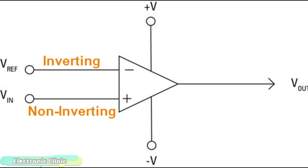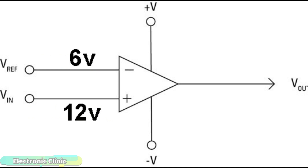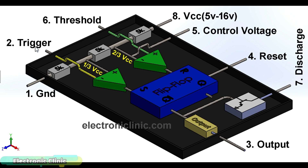A voltage comparator is an electronic device that is used to compare voltages. The output of the voltage comparator depends on the voltages available at the inverting and non-inverting inputs. If the voltage at the non-inverting input is greater than the voltage at the inverting input, then the output will be high, and vice versa. The two reference voltages — two-thirds and one-third of VCC — are connected with the inverting and non-inverting inputs of the two voltage comparators. The output of these comparators can be controlled using the trigger, threshold, and control voltage pins.